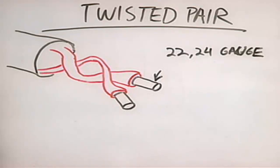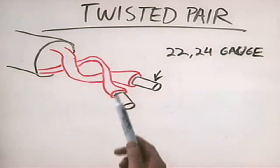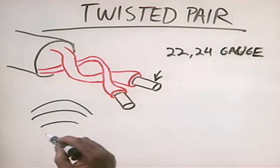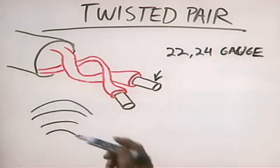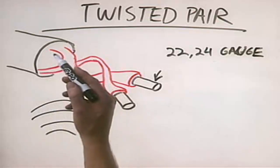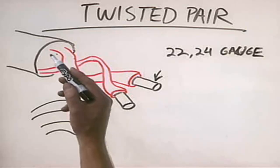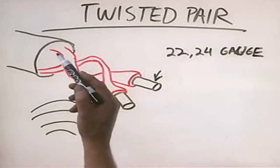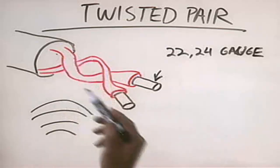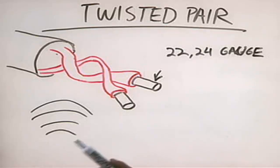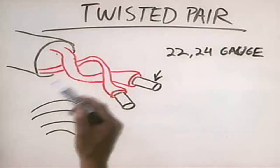Unfortunately, twisted pair does have a couple of drawbacks. Number one, it is susceptible to EMI, both from itself — which is why we twist the wires — but also from the environment where it's run. For example, one thing we always tell folks when running wiring is don't run it anywhere near a fluorescent light fixture, because the ballast puts out a tremendous amount of electromagnetic interference and these wires will just pick it right up.